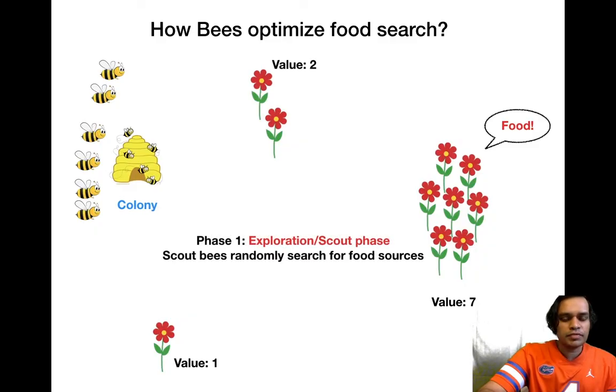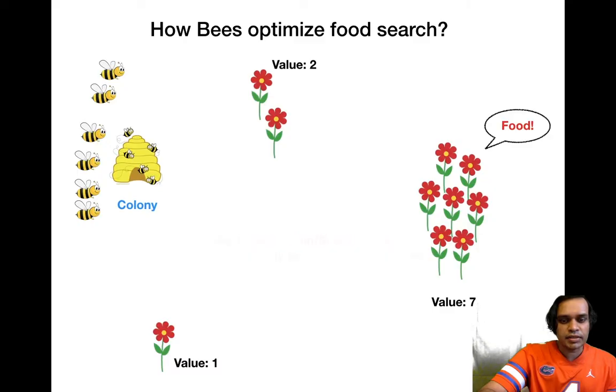The first thing that happens is known as the exploration phase or the phase of the scout. What happens here is a couple of random bees go about exploring from the colony in search of food sources. The first bee has locked on to value two flowers, and the second bee goes zigzagging and finds the single flower of value one.